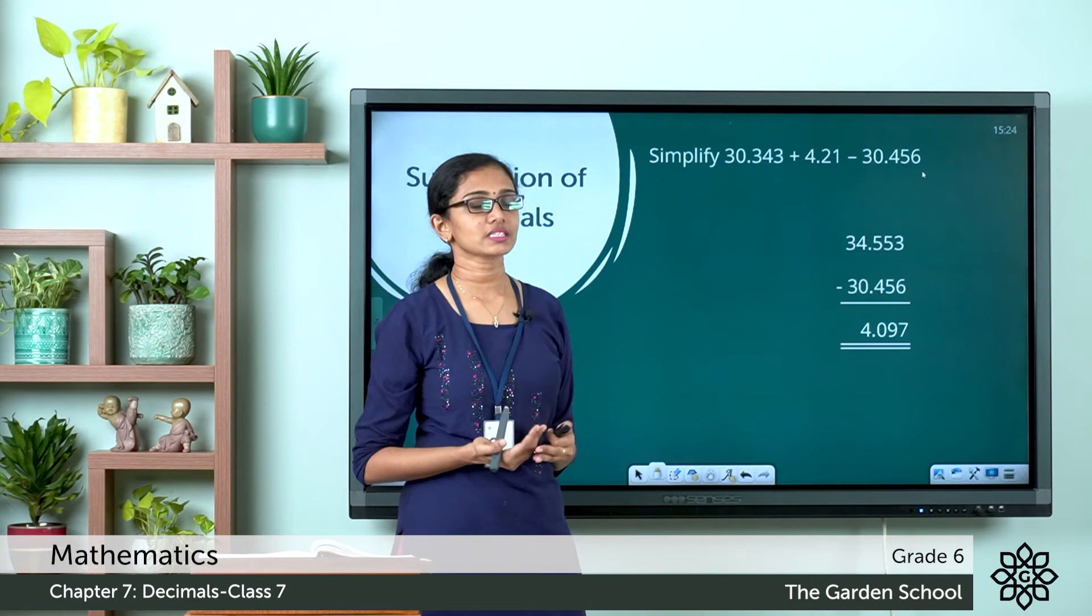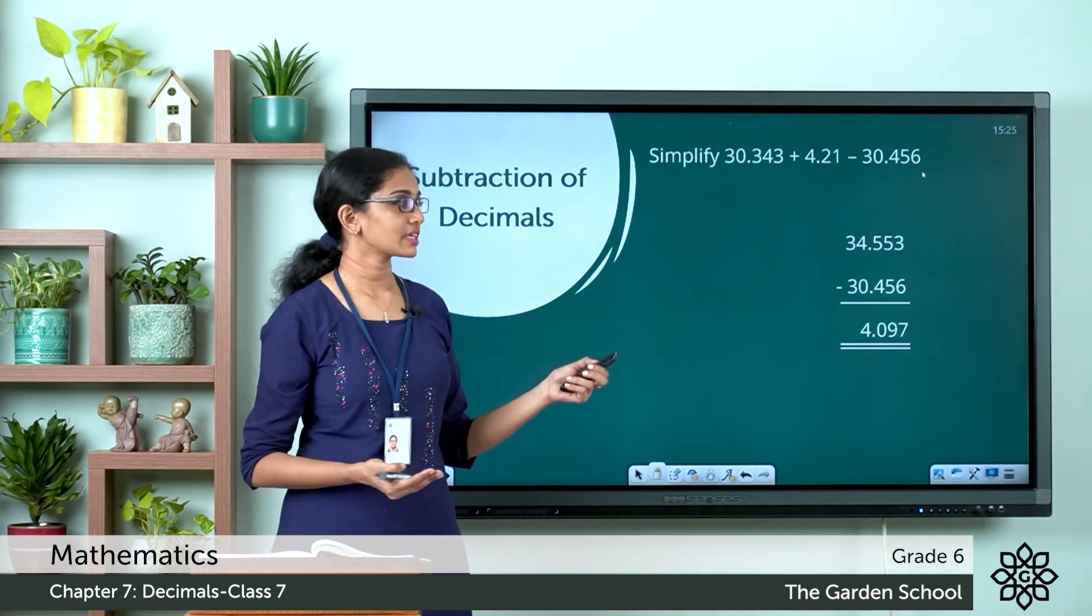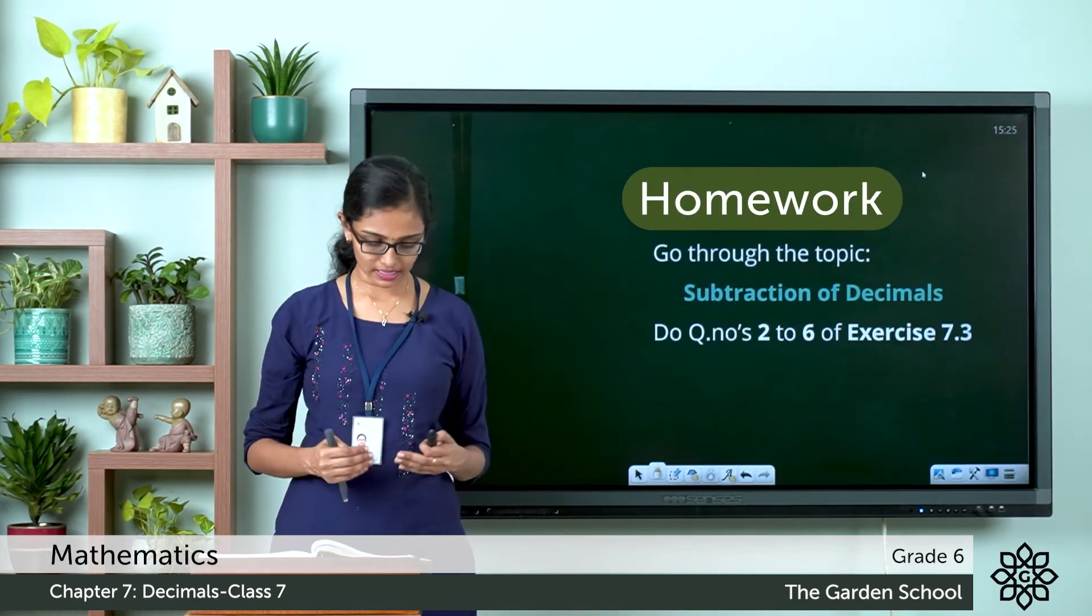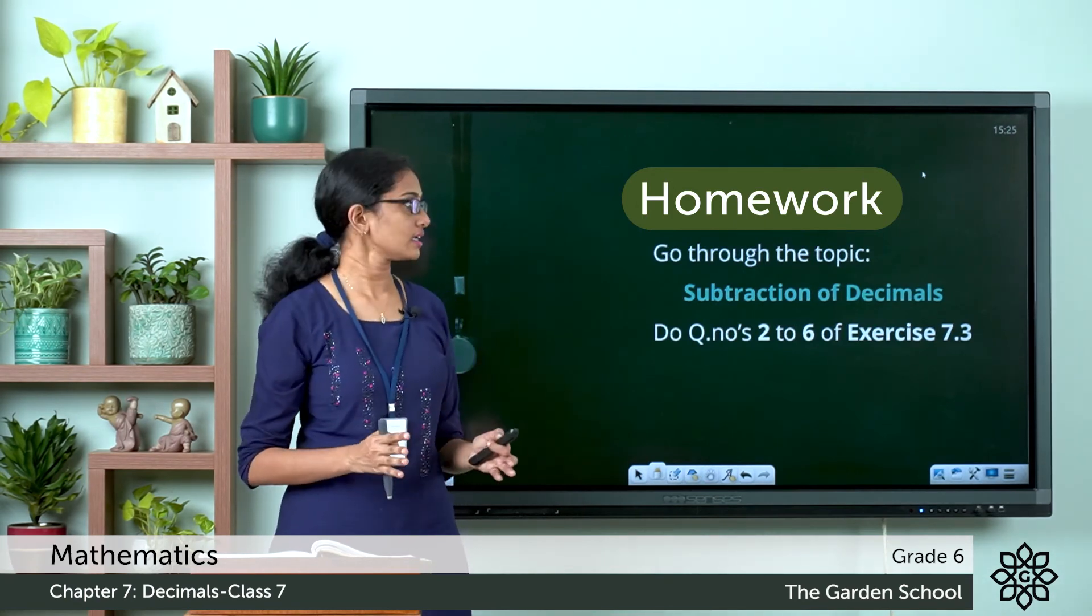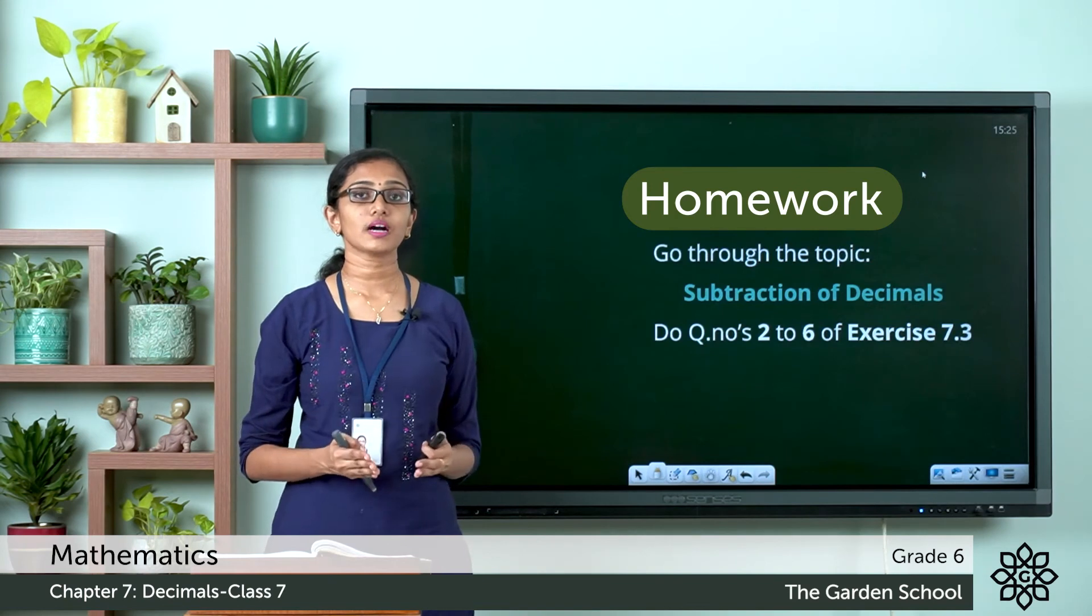So when this mathematical statement is simplified, you get the final answer as 4.097. So I hope this question is clear to you. Now you have more examples given in your textbook. This is in page number 104.